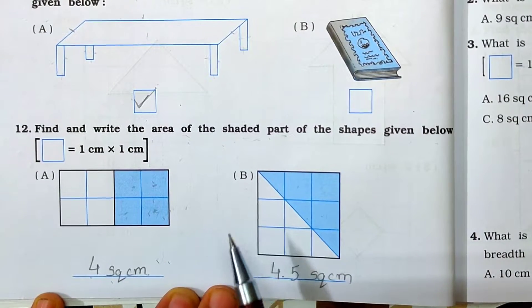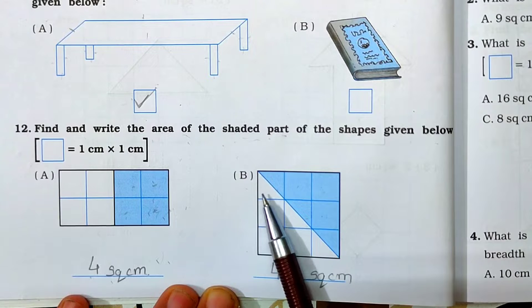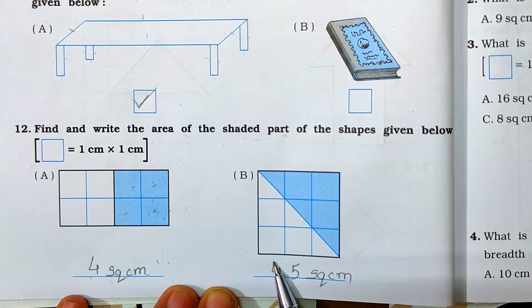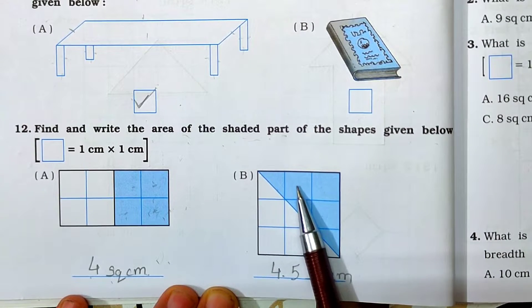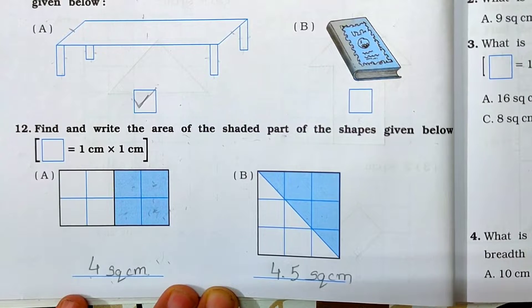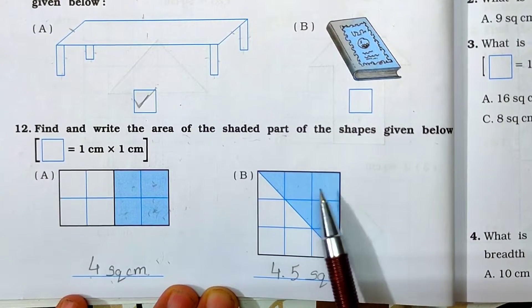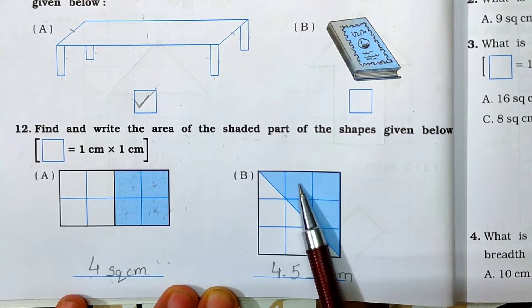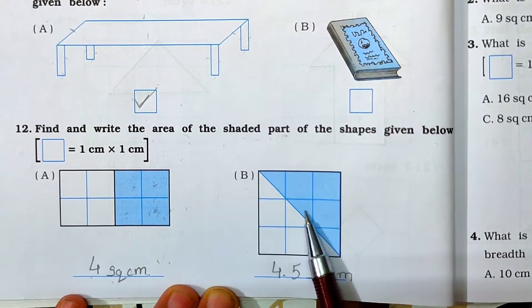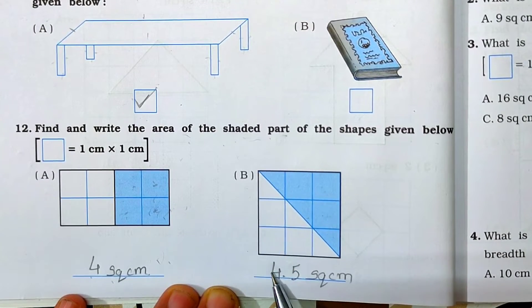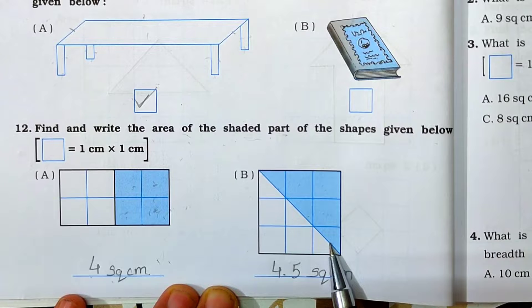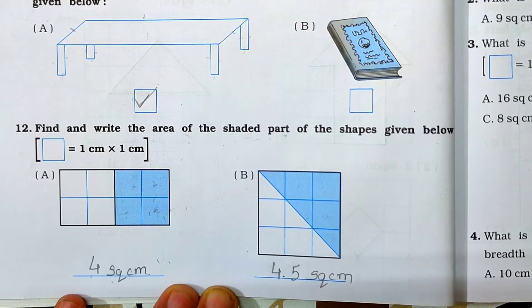Now here part B. Again see the shaded part and find out the area. First of all find the full squares: 1, 2 and 3. Now see the two halves — this one makes 3. Two halves means one. So 1, 2, 3, 4. And this one again half is remaining. So 4.5 square centimeter.